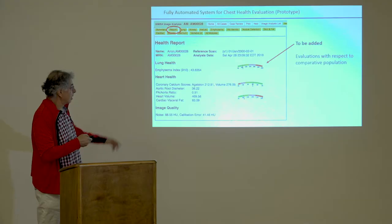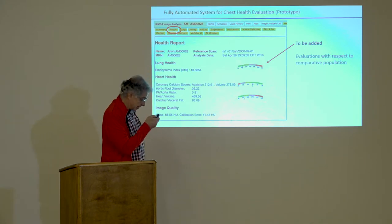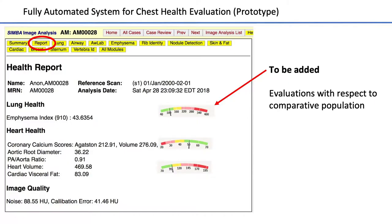We haven't completed this yet — this is actually where the big challenge lies: getting the normal ranges and where a patient fits on that bar, because scanners aren't all calibrated the same way. There's still a lot to do, but this is the exciting part. We're going to work with the FDA to really get this down. We think this could be transformative in medicine — every CT scan should eventually have something to this effect.